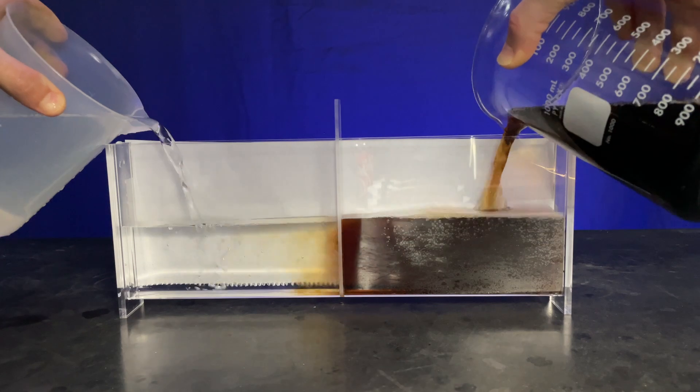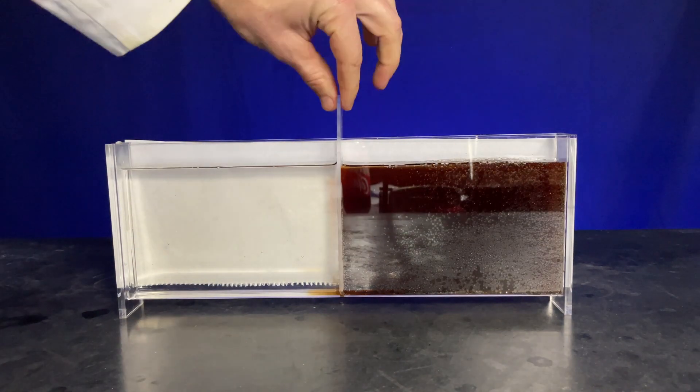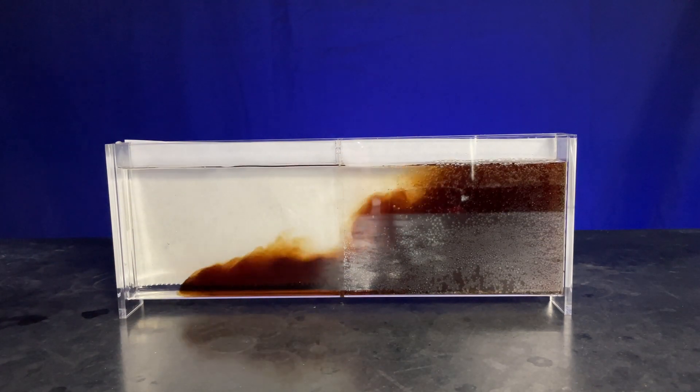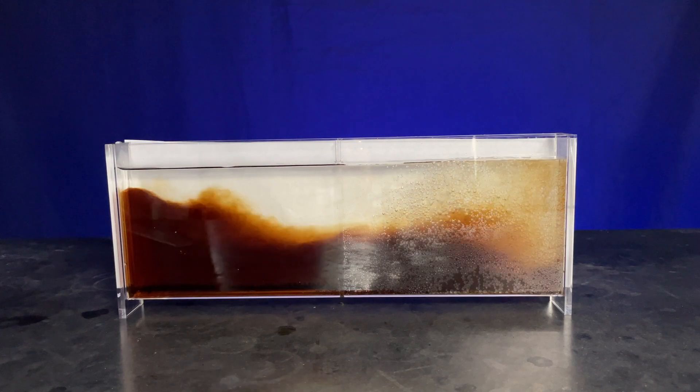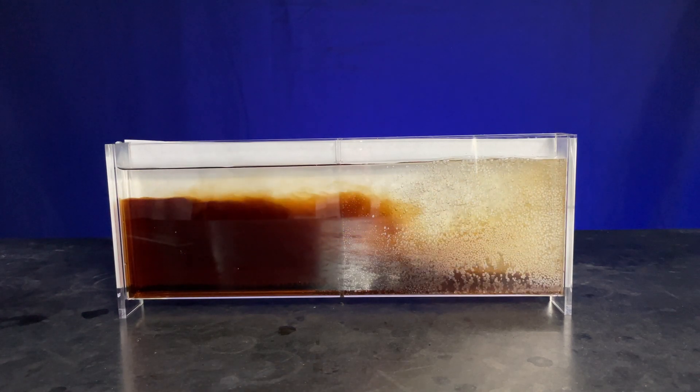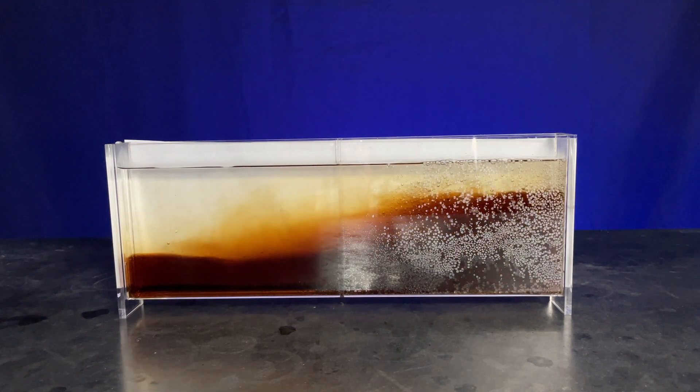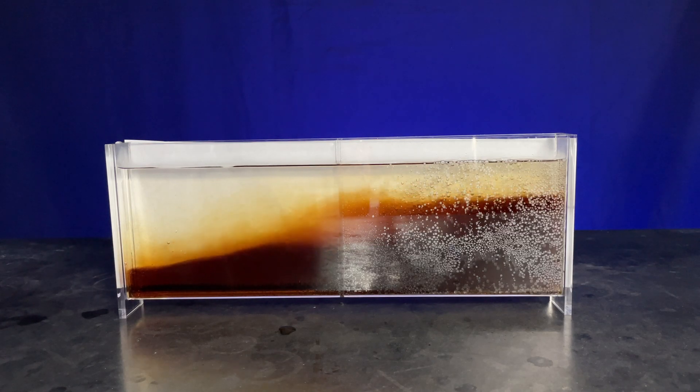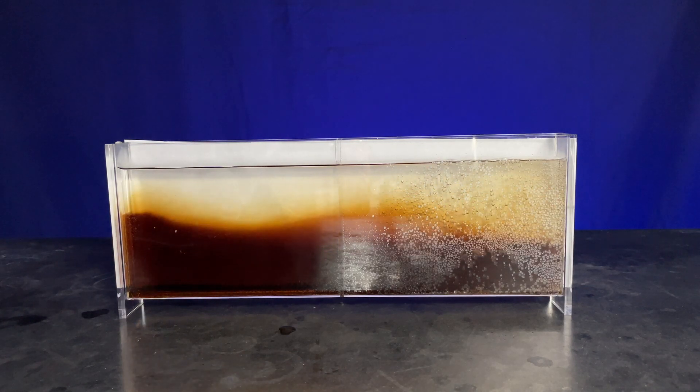So we'll fill up each side of the density tank. And then when I lift the divider, what happens is we see the Shastacola start to slide underneath that less dense warm layer. And this is really cool because it starts to show us what is going on in Lake Nyos.